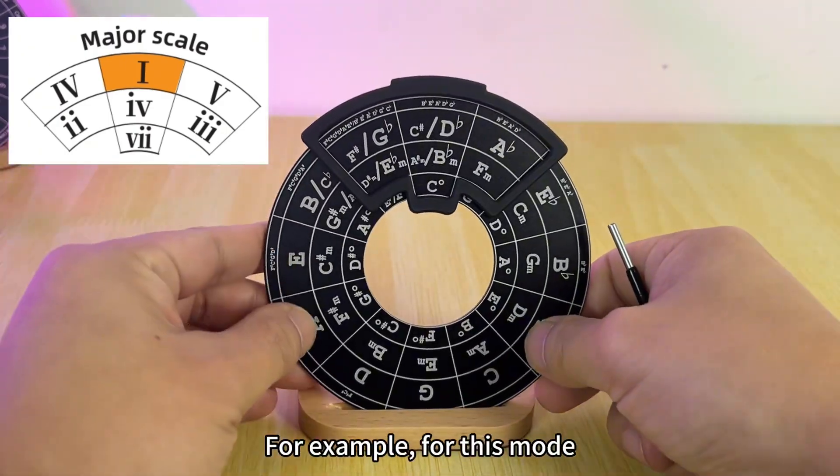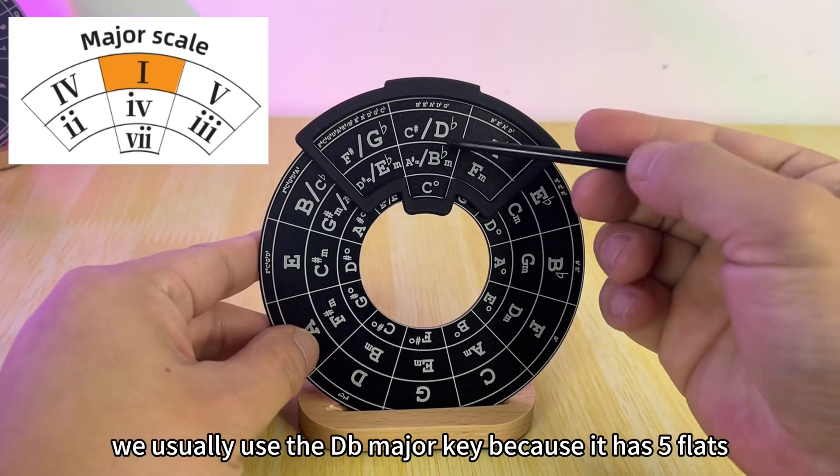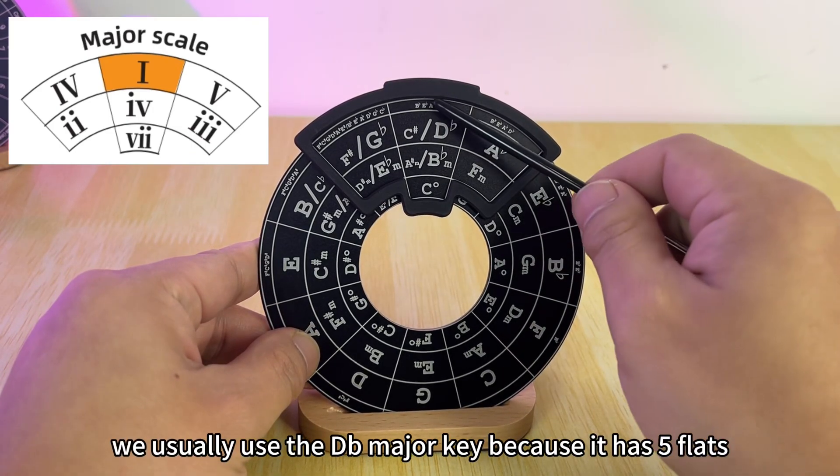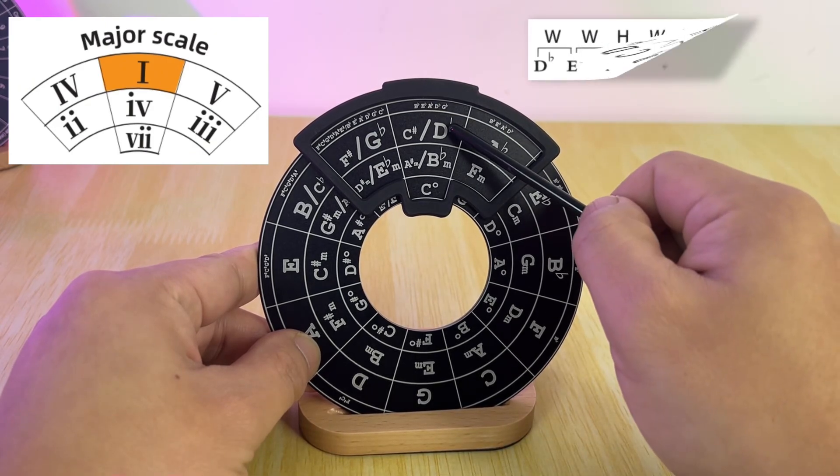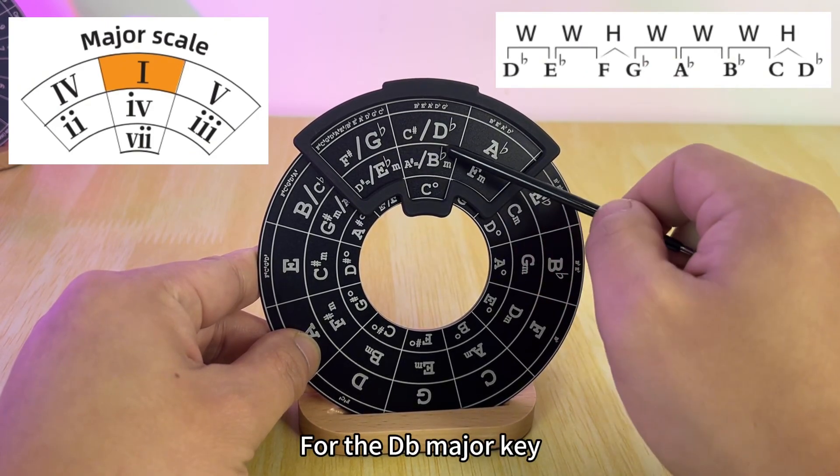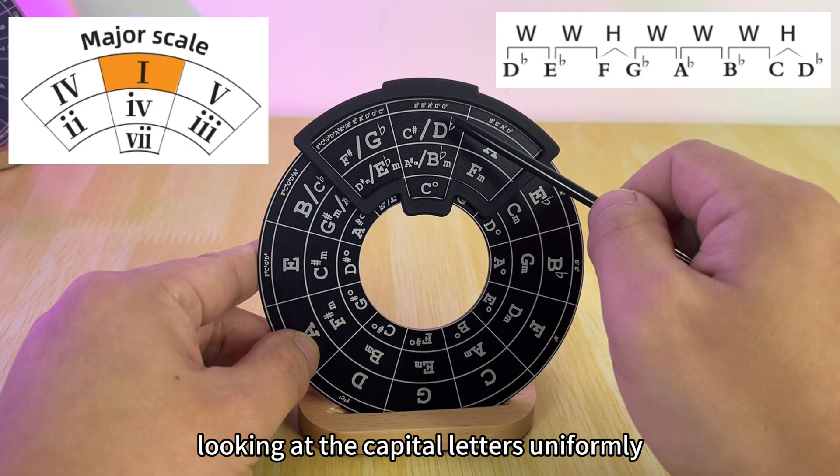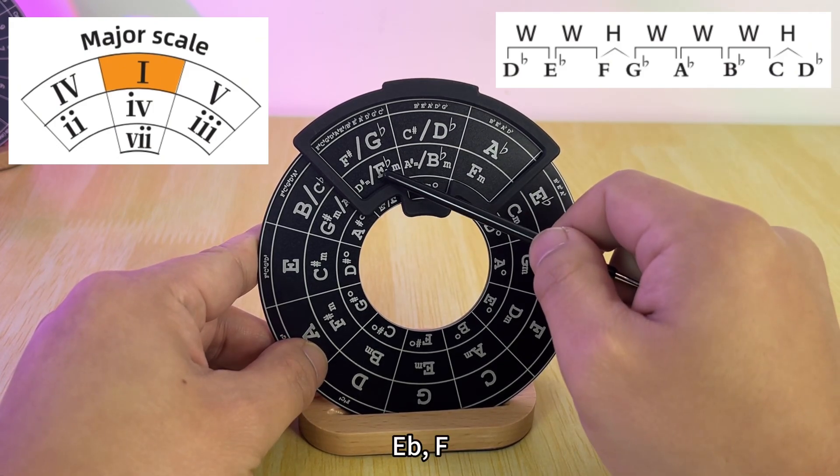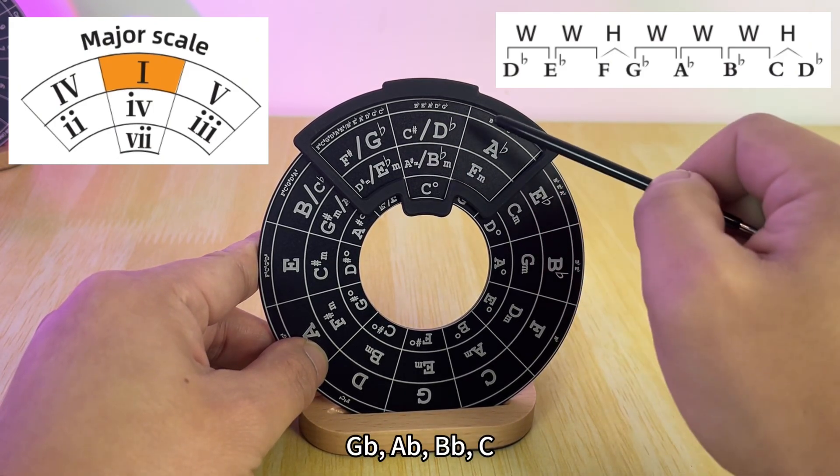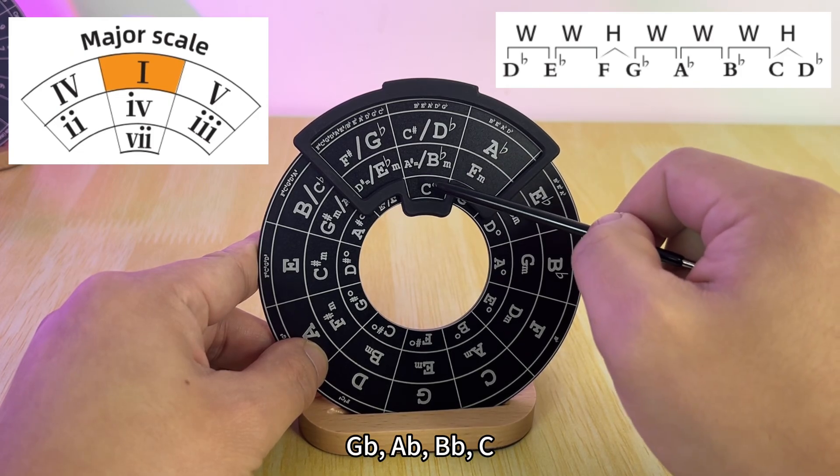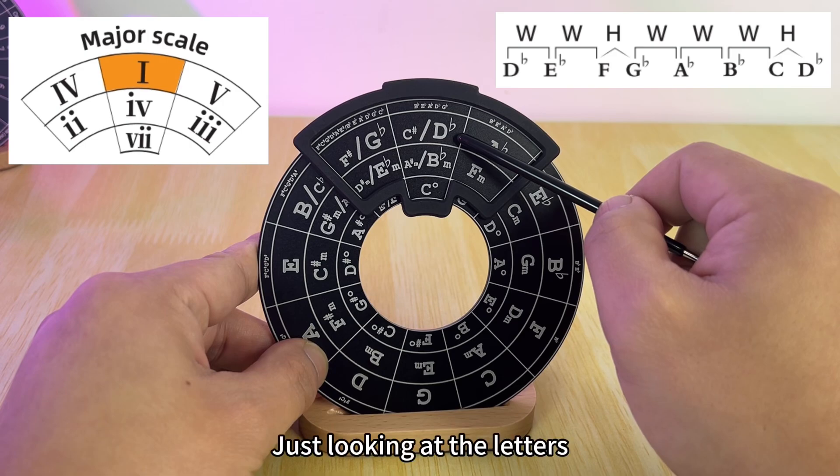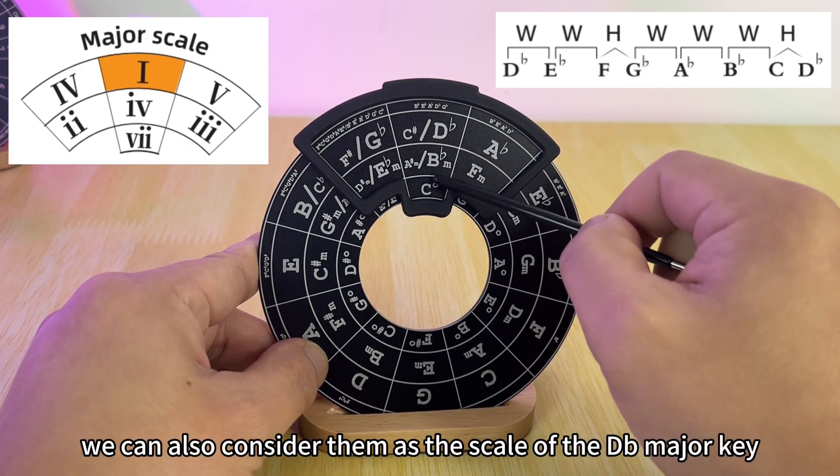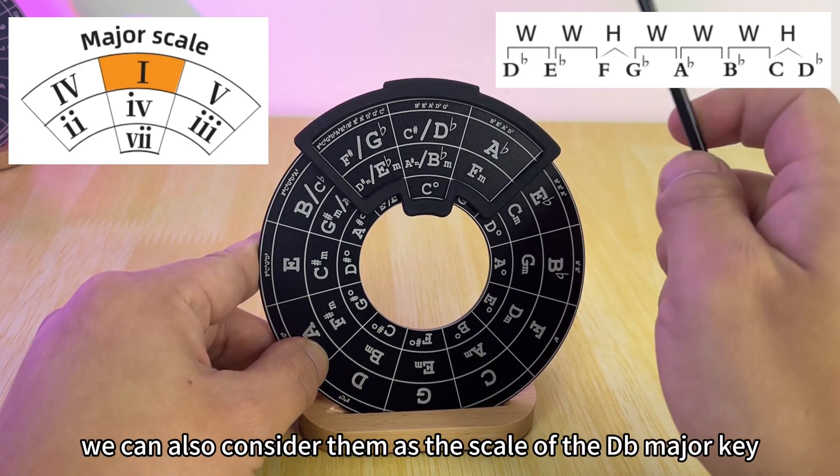Next there are several special cases. For example, for this mode we usually use the D flat major key because it has five flats. For the D flat major key, looking at the capital letters uniformly, we have D♭, E♭, F, G♭, A♭, B♭, C. These are the seven chords of the D flat major key. Just looking at the letters, we can also consider them as the scale of the D flat major key.